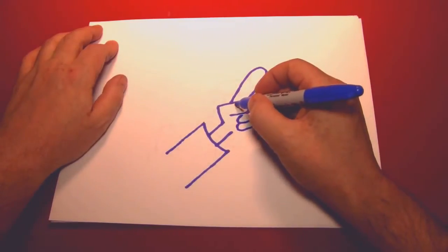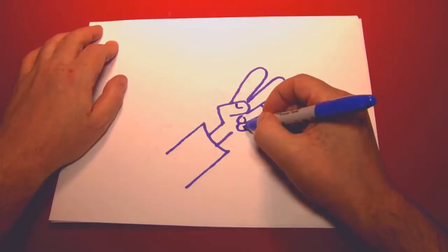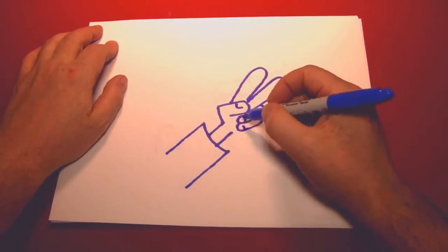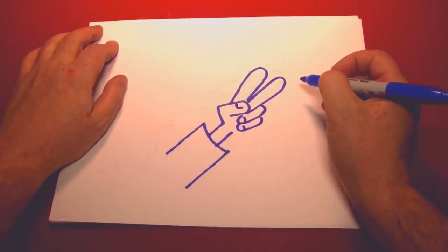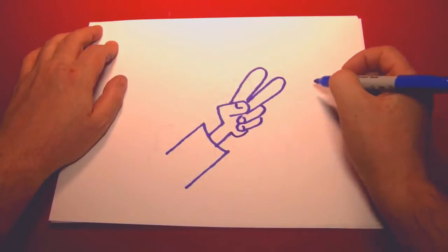Let's add some fingernails. One on the thumb and a couple on the fingers right there. Just little lines like that are enough to indicate that. And finish up the palm of the hand with a curve right there.